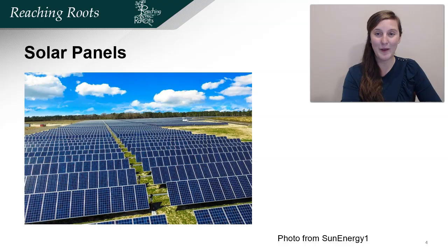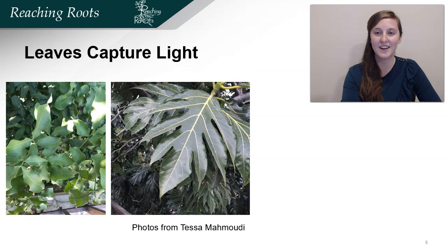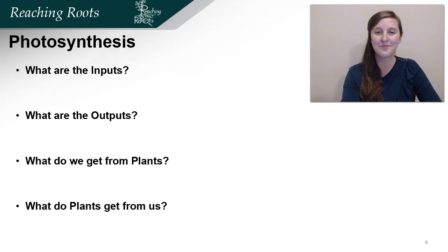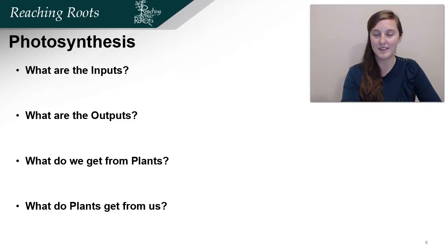Plants have solar panels called leaves to capture the sun's energy and to store it. So leaves are the solar panels of plants. The larger the surface area, the more light that can be captured. Before we get into the specifics of photosynthesis, I want to take a bird's eye view to see what the inputs are and the outputs.